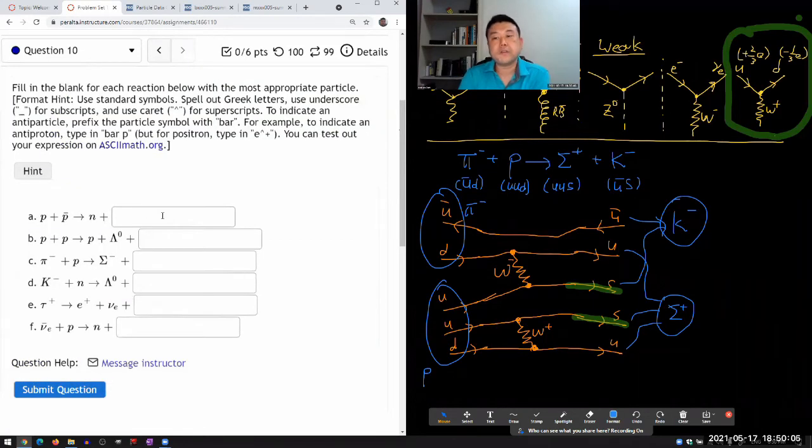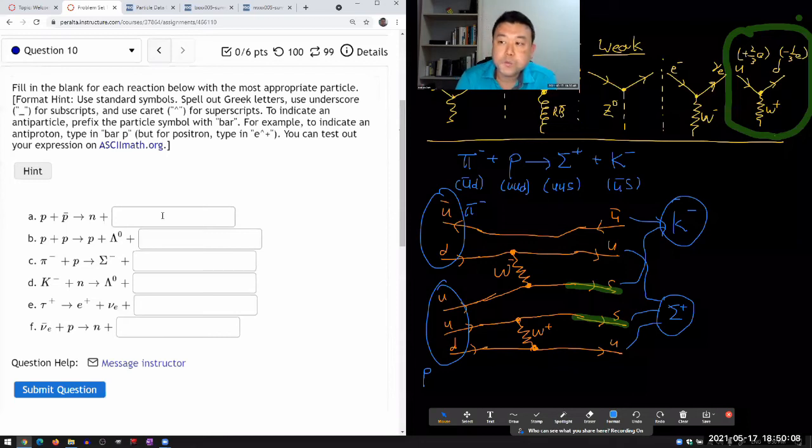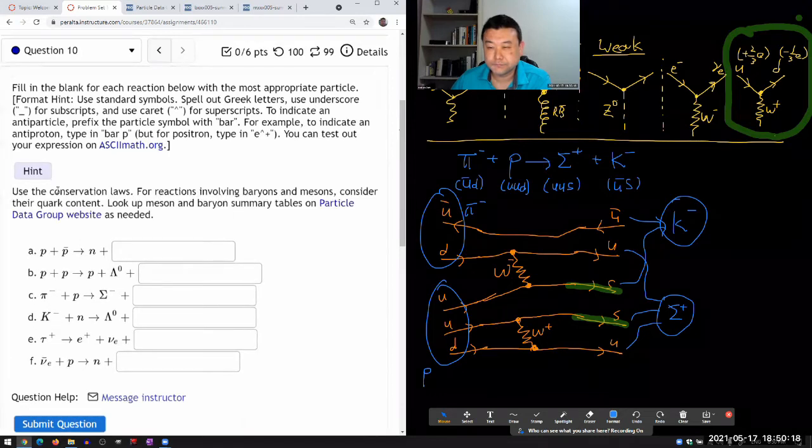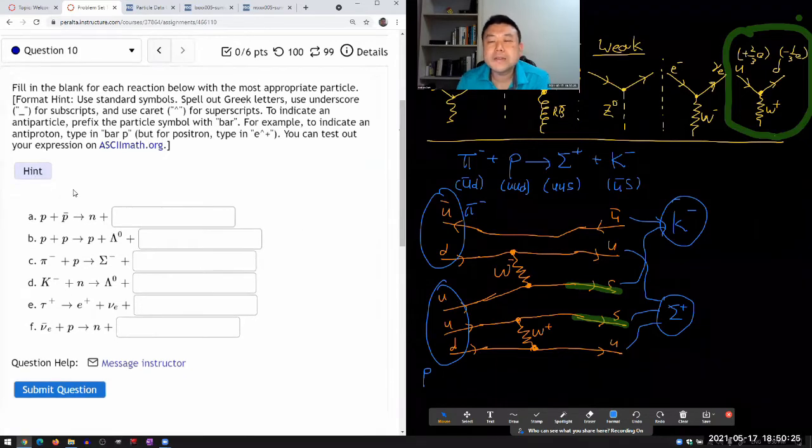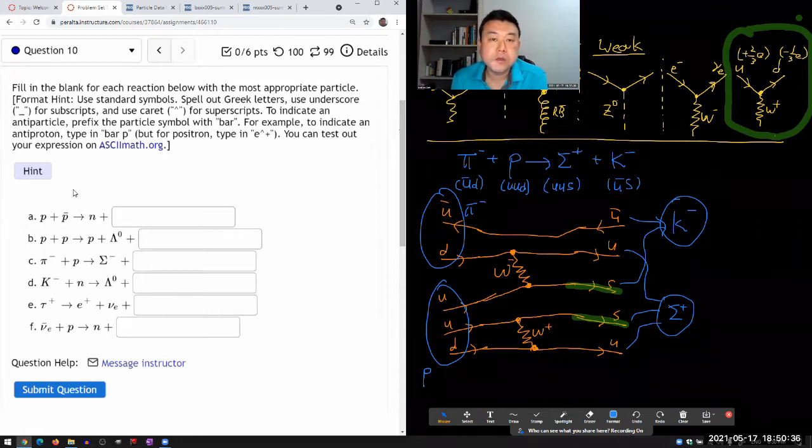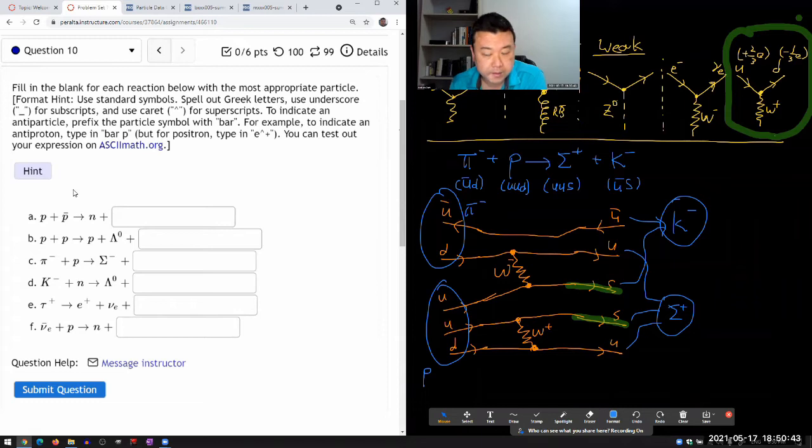Question 10 says, fill in the blank for each reaction below with the most appropriate particle and use conservation laws. I'm going to go in this way: whenever an interaction is possible by electromagnetic or strong interaction, I'm going to go with that. Only when it becomes impossible to make that happen will I use the last resort of using weak interaction, which would have a strangeness violating thing.